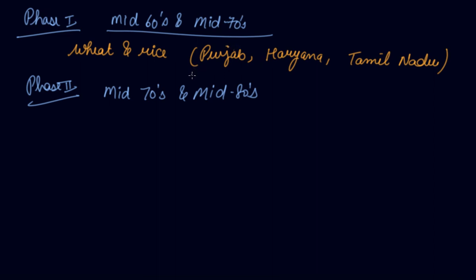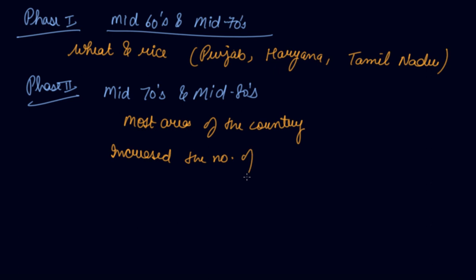In Phase two, from mid-1970s to mid-1980s, the impact of the Green Revolution became widespread and covered almost most areas of the country. It also increased the number of crops — whereas only wheat and rice were focused in Phase one, many other crops also became part of the Green Revolution, such as cotton, bajra, and sugarcane.